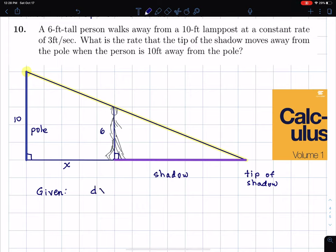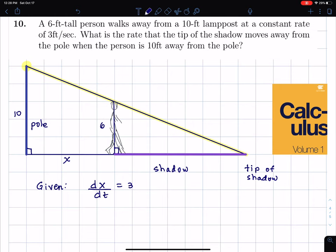Now what I'm going to do is I'm going to denote as x the distance between the person and the pole. And I'm going to say that dx/dt is equal to 3. And what I mean by that is that this length, x, is changing at a rate of 3 feet per second. Or I'll just write 3,